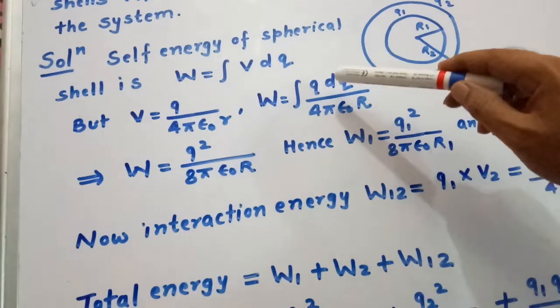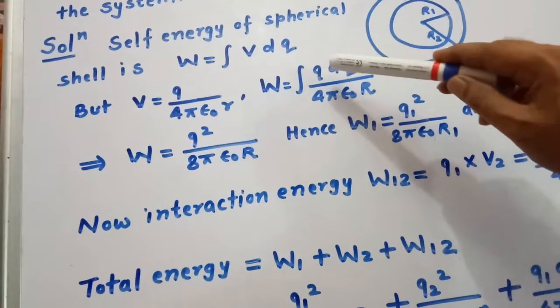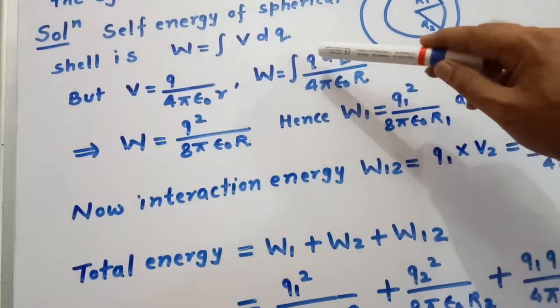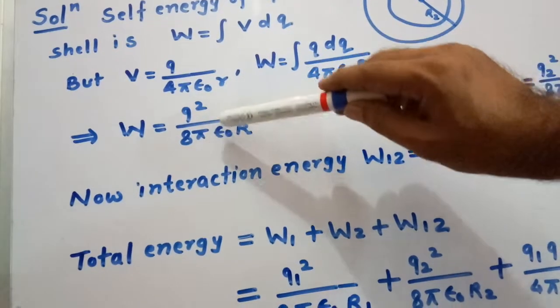We get w equal to q upon 4π epsilon naught r dq. We integrate this q dq, which becomes q squared divided by 2, so we get w equal to q squared divided by 8π epsilon naught r.